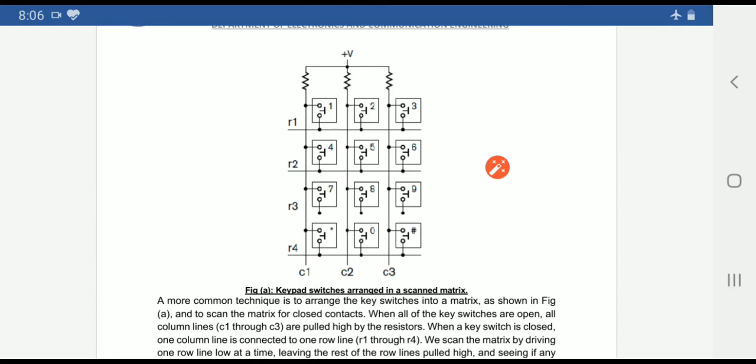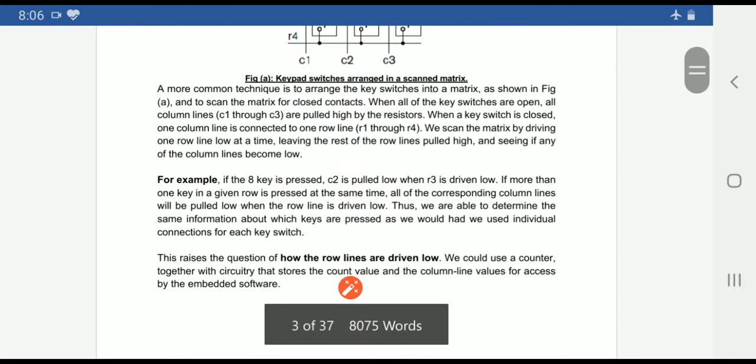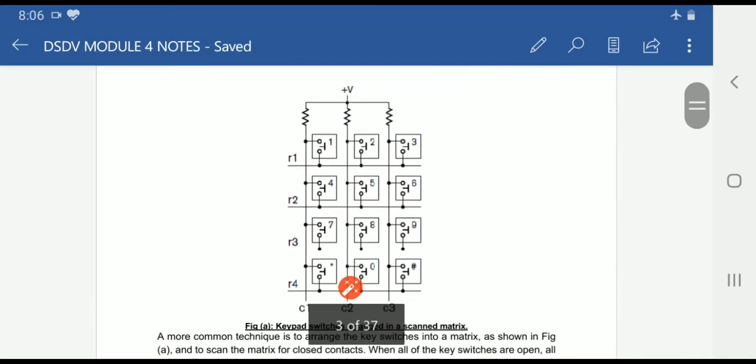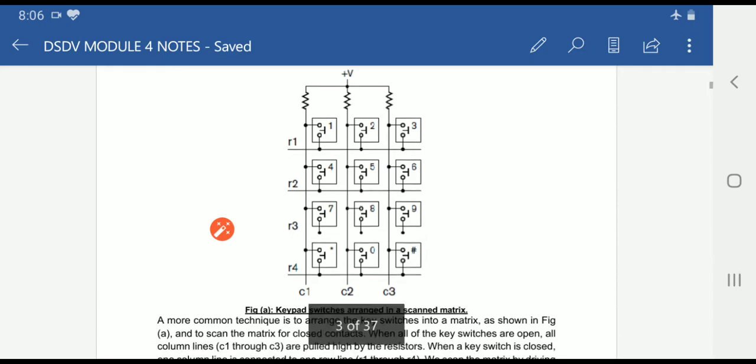If a particular switch is pressed, then the particular column will be pulled low by the input registers which are connected. And with respect to that, the row is also driven low by the additional circuit which is connected to it.